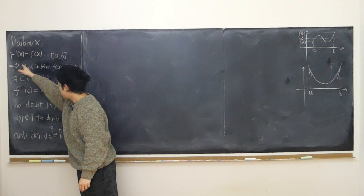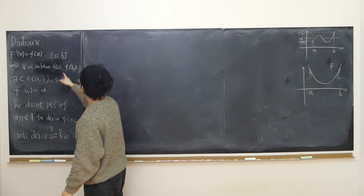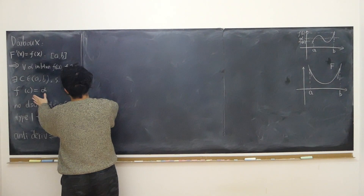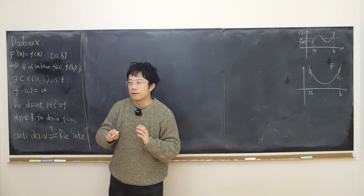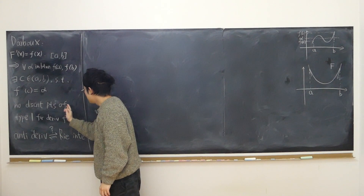Then if we take any value in between those functional values — little f at both edges — there is always some c in the open interval whose functional value equals alpha. In other words, little f takes all the values in between f(a) and f(b), no matter if little f is continuous or not.